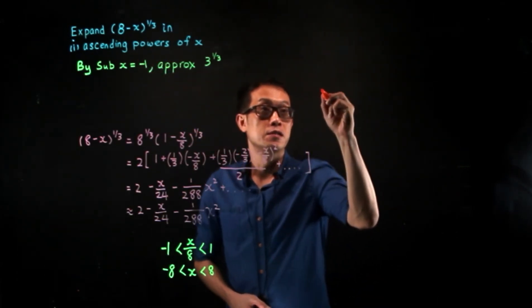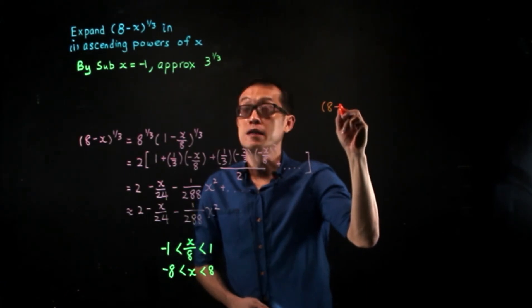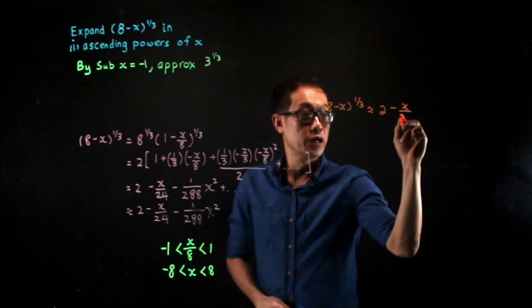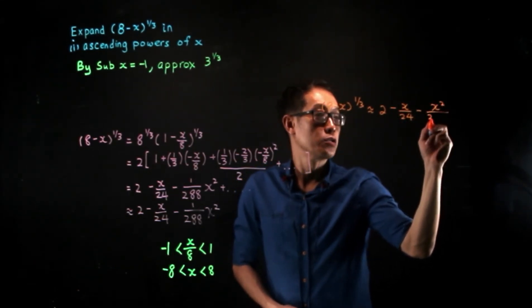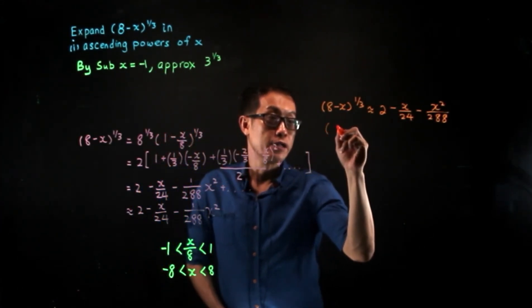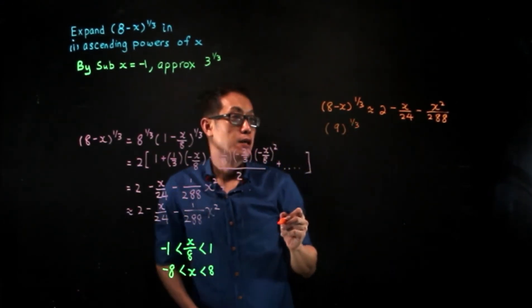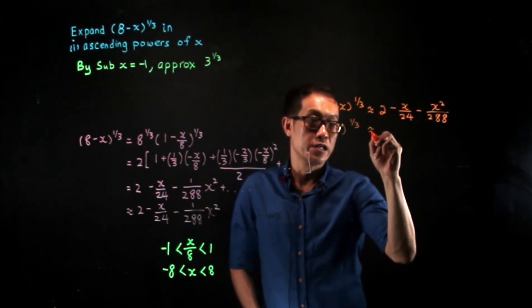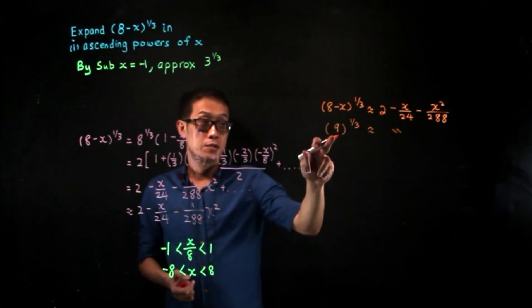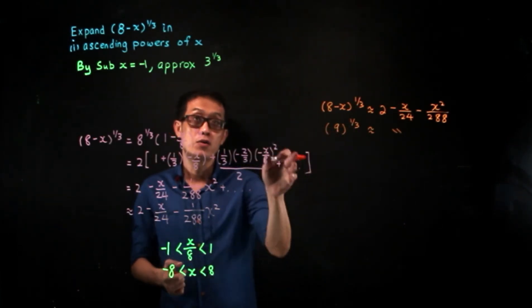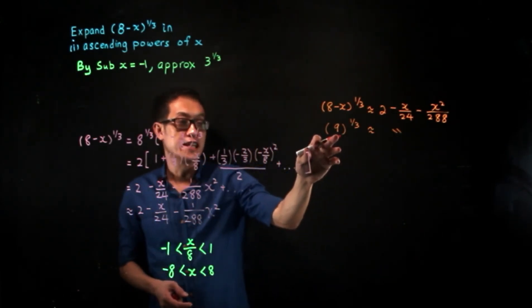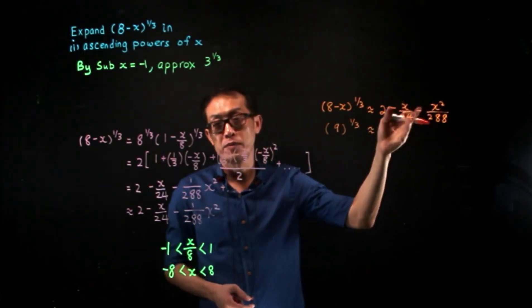Substituting X = −1 into the ascending expansion 8 minus X to the one-third gives 9 to the one-third on the left. However, that is the cube root of 9, not the cube root of 3. To convert, we cannot simply take the square root of both sides easily since the right-hand side after substituting minus 1 is unlikely to be a perfect square.